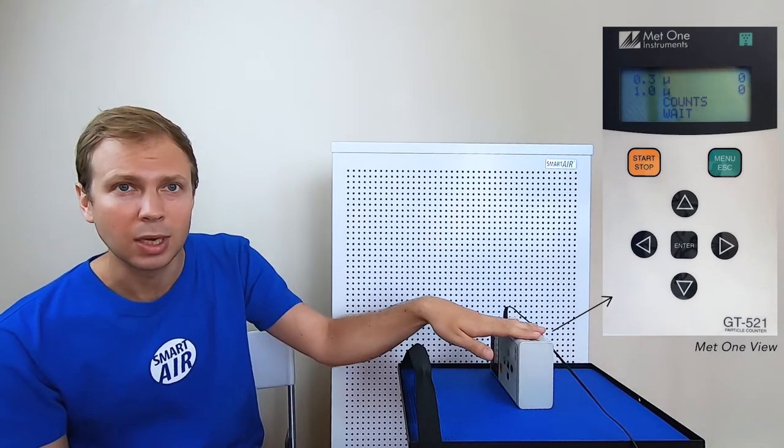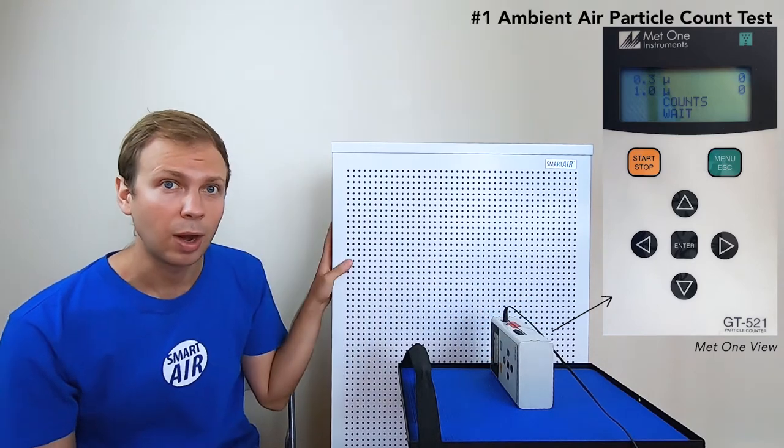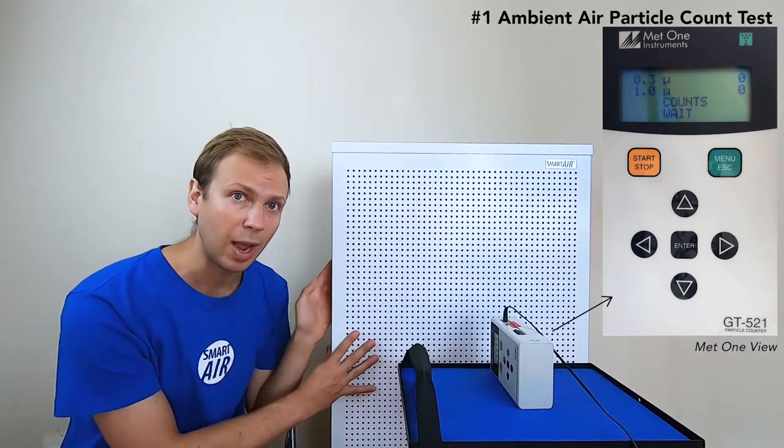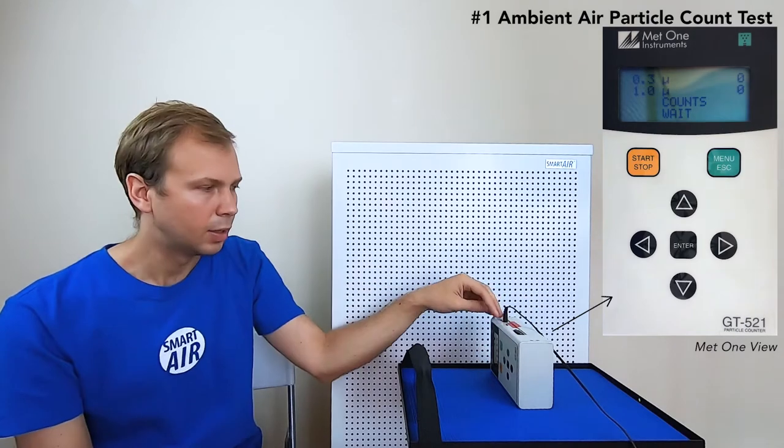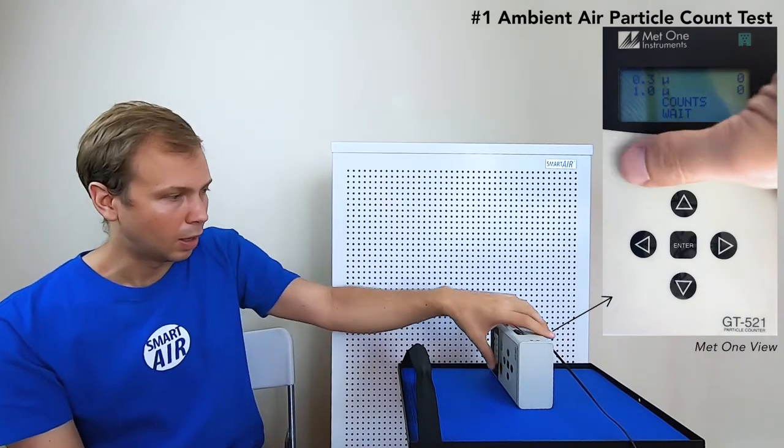The way that we run this test is we first measure the particle count without our BLAST filter turned on, so without air passing through the filter. Let's turn on the MET1 now and look at the numbers.